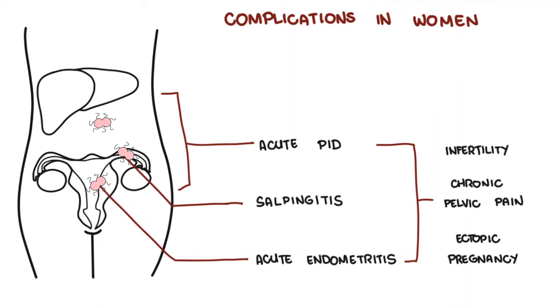Neisseria gonorrhea can also disseminate from the fallopian tubes through the peritoneum to the liver capsule, resulting in something called perihepatitis, termed Fitzhugh-Curtis syndrome.